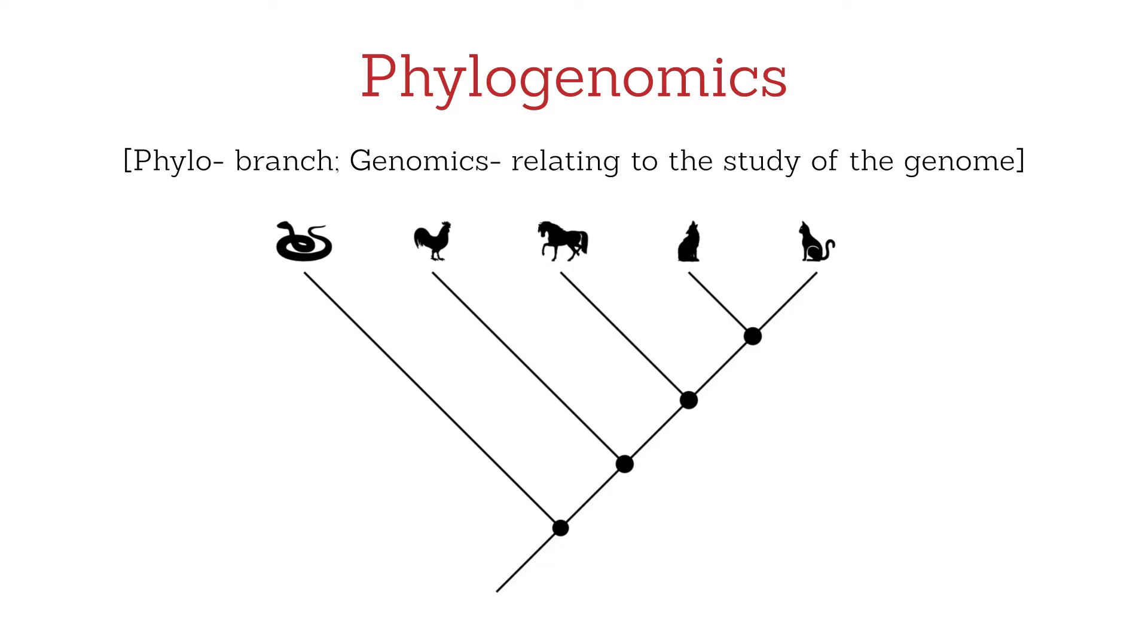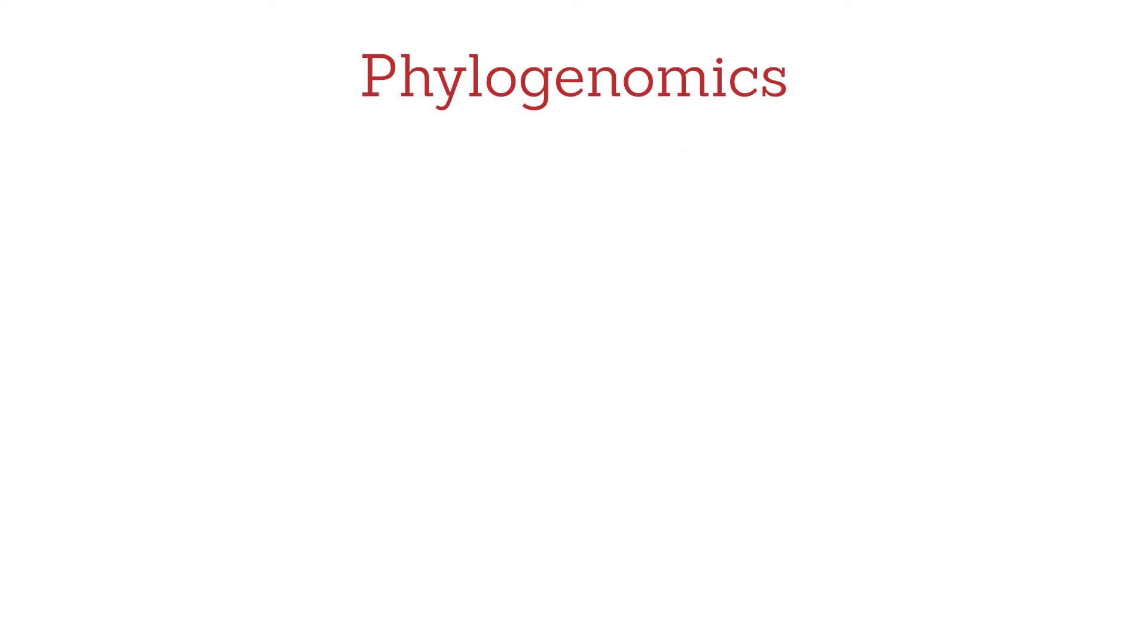These trees can provide us with insights into what ancestral life was like. All modern animals share a common ancestor, a single species whose descendants evolved over time to give rise to the wide diversity we see today.